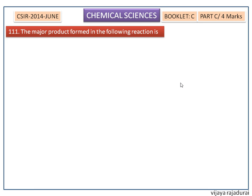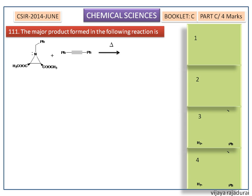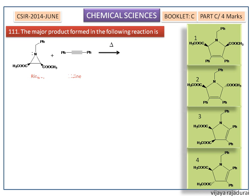The major product formed in the following reaction is shown in the options. On heating, aziridine undergoes ring opening to the dipolar product. Four electrons are involved in this ring opening reaction — two from the lone pair on the nitrogen and two from the sigma bond which breaks, as shown by the curved arrows — according to the Woodward-Hoffmann rule.